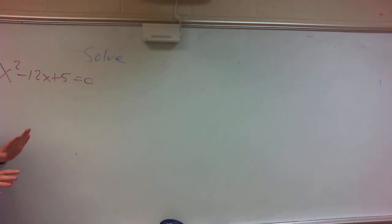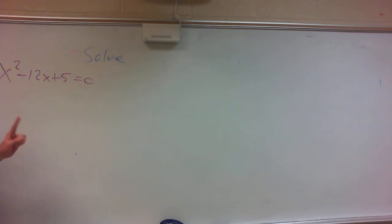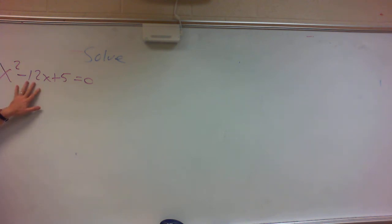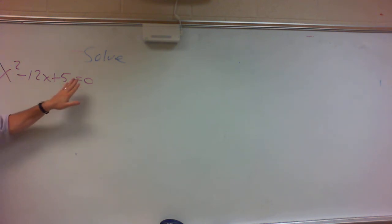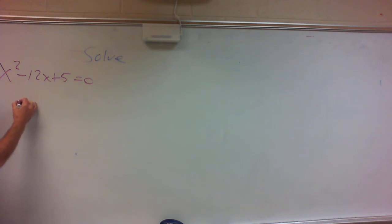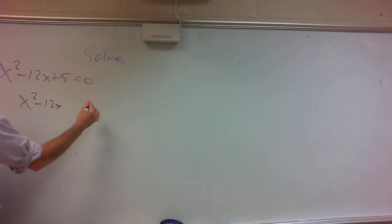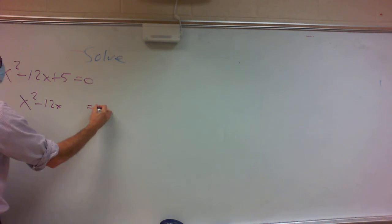We need to change the way it looks. I want the letters on the left and the number on the right. You say: I can't deal with this number, so I'm just going to move it to the other side. I'm going to write this as x squared minus 12x, leave a space, equals negative 5.